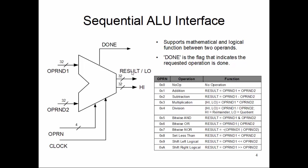This sequential ALU takes two 32-bit operands and has two outputs. For most arithmetic and logical operations the result is 32-bit, but for multiplication or division — which needs two 32-bit values to store quotient/remainder or a 64-bit multiplication result — we have two 32-bit output lines: result-low and result-high. Being a sequential circuit, it also takes a clock and a 4-bit operation code.